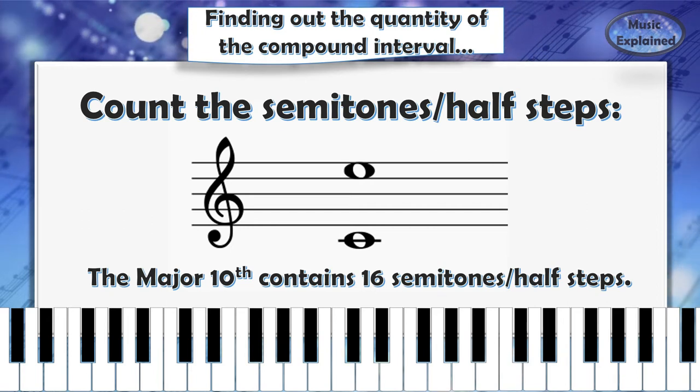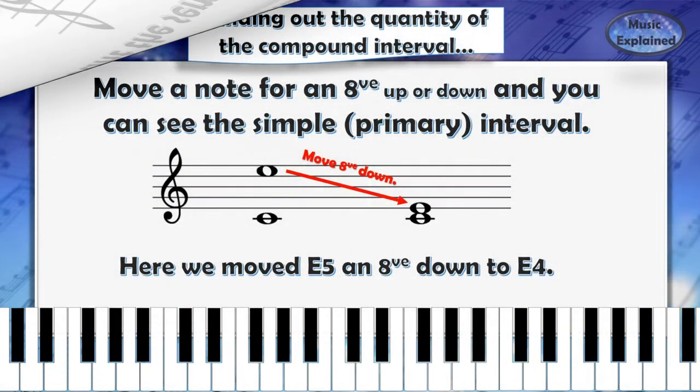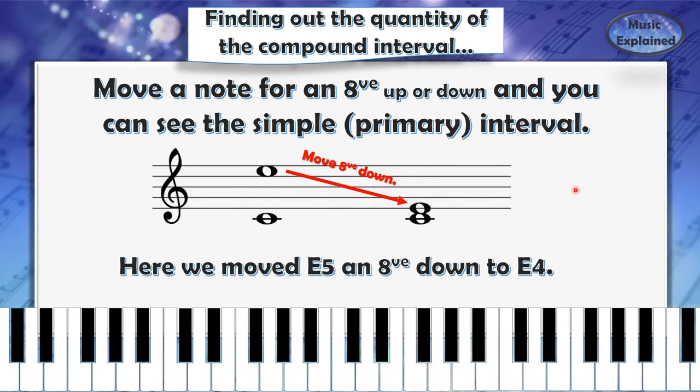The second way, and I think this is the easier way, is if you move a note an octave up or down and you can see the simple or primary interval. I took again C and E as an example.